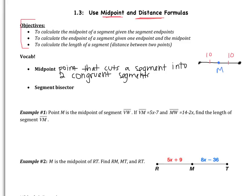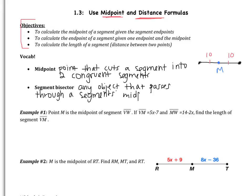A segment bisector is any object that passes through a segment's midpoint. It could be a line, a ray, another segment, or a point. So this right here would be a segment bisector — it bisects a segment. The word 'bisect' just means cut in half.